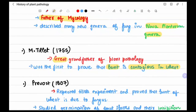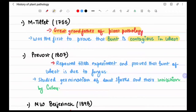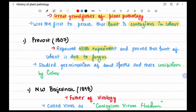Prevost in 1807 repeated Tillet's experiments and proved that bunt is caused by a fungus. He studied the germination of smut spores and their inhibition by copper sulfate — an important examination point that Prevost studied smut spore germination and its inhibition by copper sulfate.